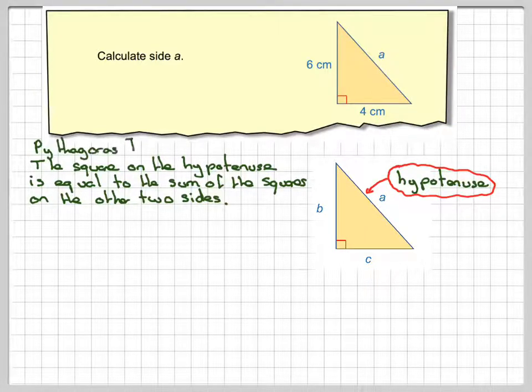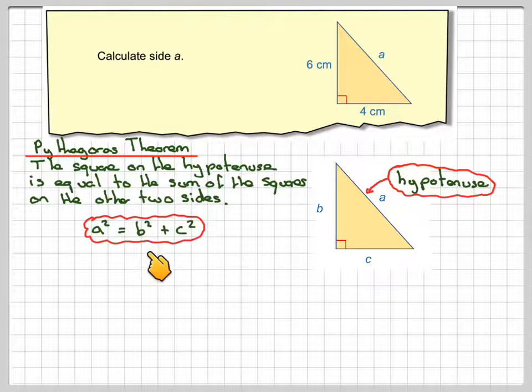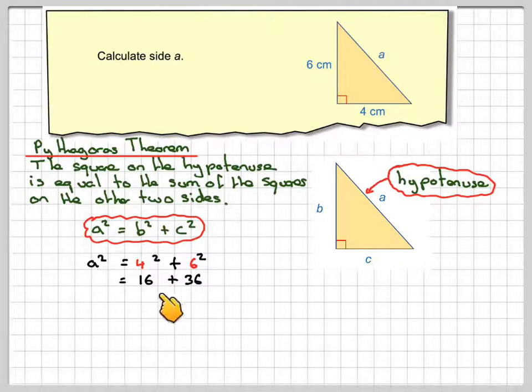So this is called Pythagoras' theorem. So A squared is equal to B squared plus C squared, which means that A squared is equal to 4 squared plus 6 squared, which is 16 plus 36, which is 52.